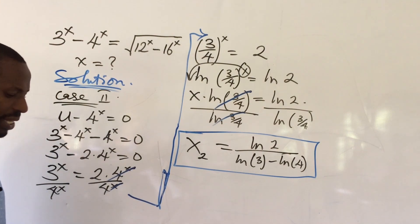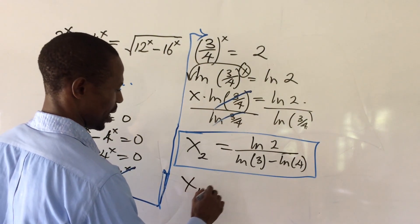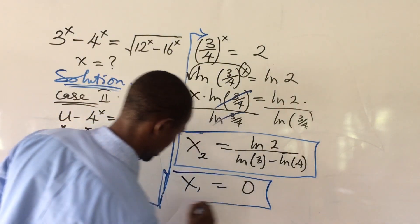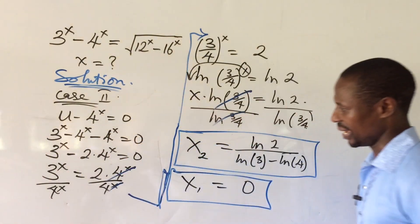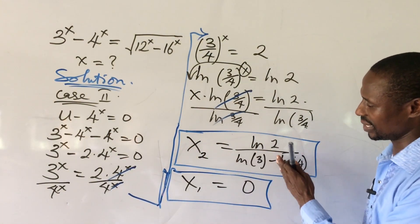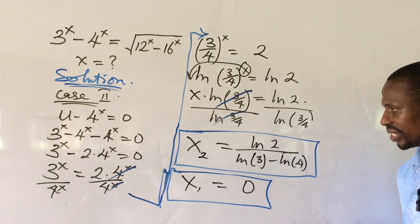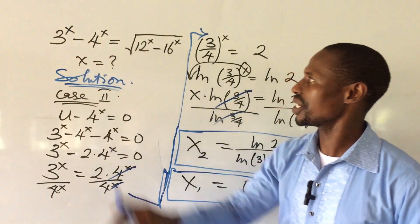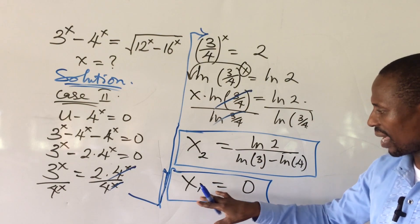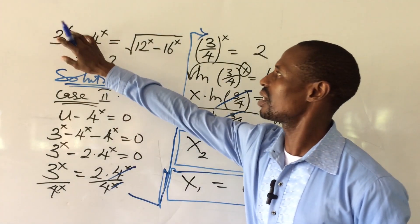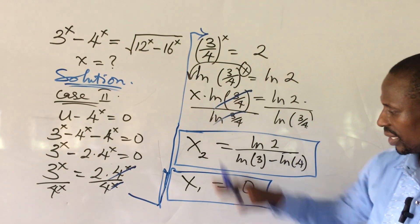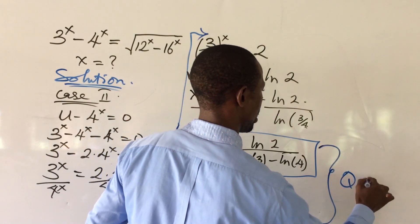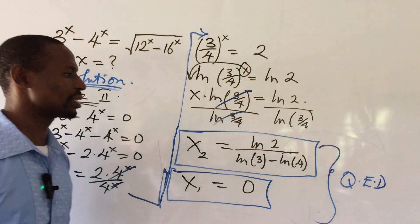Recalling that we already solved for x₁, our two solutions are: x₁ equals 0, and x₂ equals ln(2) over (ln(3) minus ln(4)). If you simplify x₂, you get a negative decimal value — approximately negative 2-point-something. If you plug both values back into the original equation, they satisfy it correctly. These are the solutions to our Olympiad math question. QED.